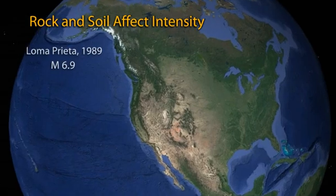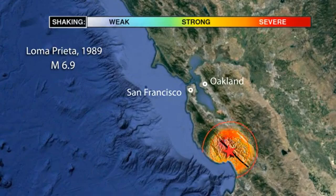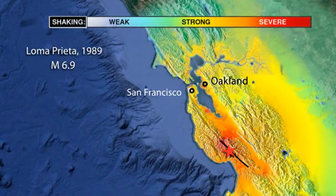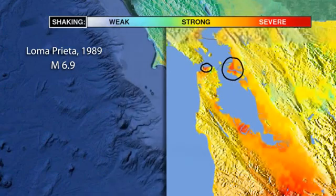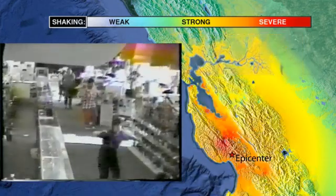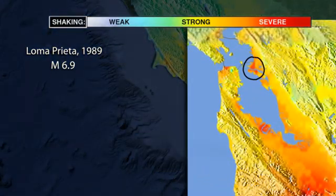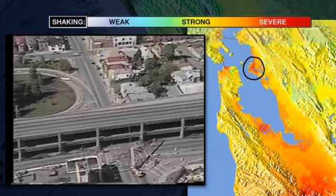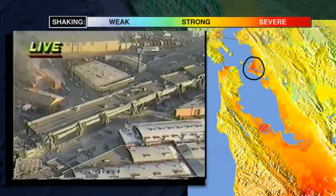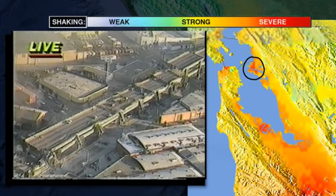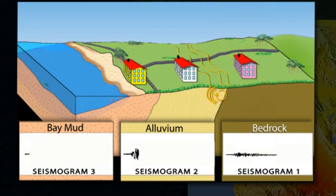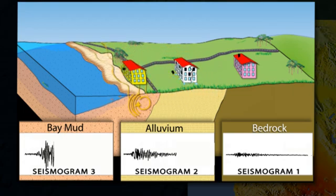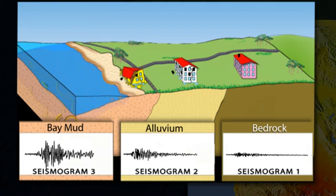In 1989, the magnitude 6.9 Loma Prieta earthquake occurred on the San Andreas Fault System near Santa Cruz, California. Ground shaking intensity and resulting damage was strongly influenced by local rock and soil conditions. The most severe damage occurred in Oakland and San Francisco's Marina District — 100 km from the epicenter — where violent intensity 9 shaking was greater than in many areas closer to the epicenter. Both areas are built on mud substrate. Seismograms from nearby stations document that seismic waves are amplified by a factor of two as they pass from bedrock to sand and gravel deposits, and the amplitude of shaking in soft, water-saturated bay mud is five times larger than on bedrock. The section of the Nimitz Freeway that collapsed was built on bay mud, taking 42 lives.